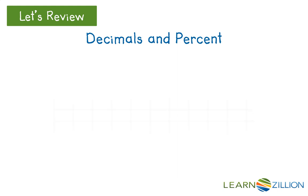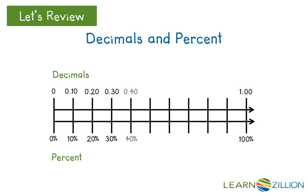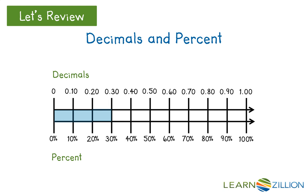This double number line is divided into 10 equal sections. The bottom row displays percents from 0 to 100 percent. The top row displays decimals. For example, 10 percent is the same as 0.10, 20 percent is the same as 0.20, 30 percent is the same as 0.30, and of course 100 percent is the same as 1, or 1 whole.